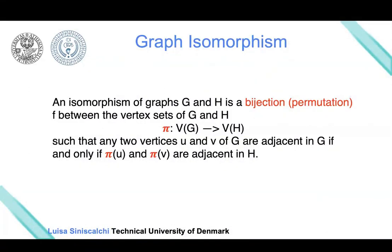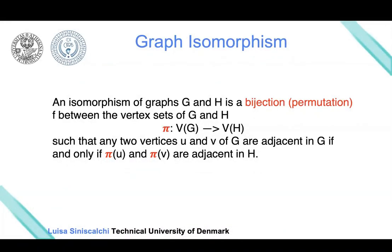We say that these two graphs are isomorphic if there exists a permutation that can map each adjacent node in G to an adjacent node in H. For each pair of nodes that have an edge, there exists a permutation mapping those nodes to nodes in H such that, after applying the permutation, these nodes are still adjacent in H. This must hold for each pair of nodes.